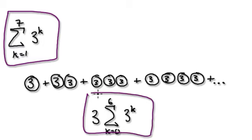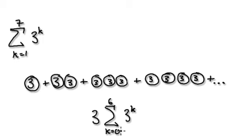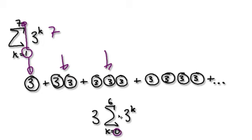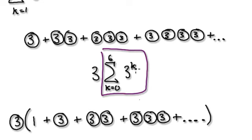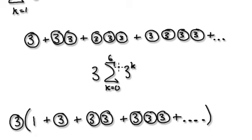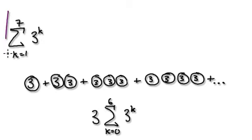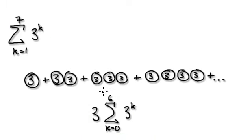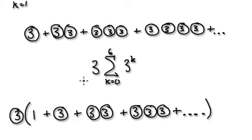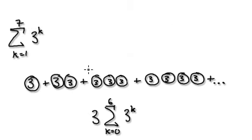You can rewrite this. Don't forget there are seven terms — one, two, three, and so on — from 1 to 7 there are seven terms. When you change the index to run from 0 to 6, there are still seven terms. And when you factorize this out there are still seven terms. You can rewrite this as this — you just have to sit down and think about it.